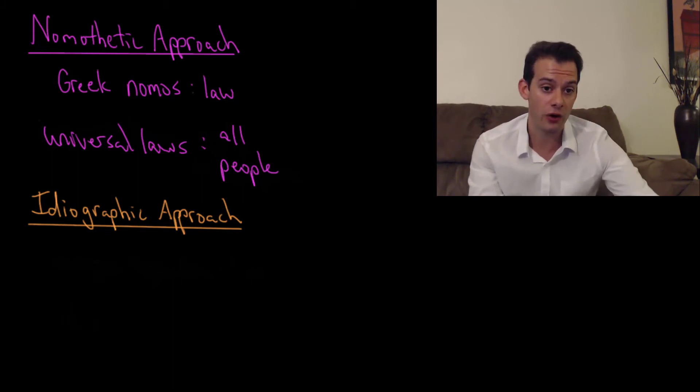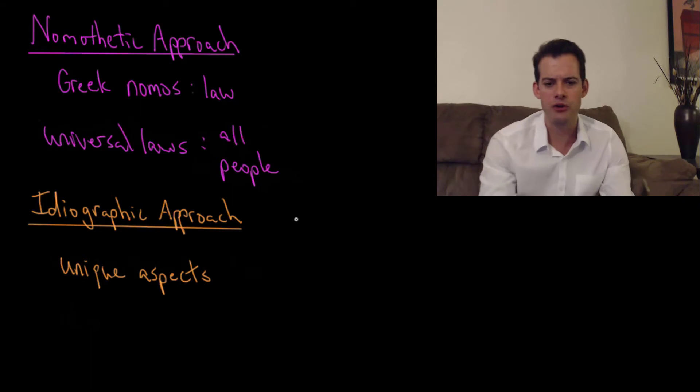On the other hand we can adopt an ideographic approach. And what an ideographic approach does is it looks for the unique aspects that aren't necessarily shared with other people. So I could focus on a particular individual and say what are the unique things about his or her personality that I don't see in other people, the peculiarities of this particular person. And you can think about studying a person's idiosyncrasies because it's derived from the same root which refers to sort of private or something that is somebody's own aspects. So that would be an ideographic approach and we'll see some examples of that in future videos.